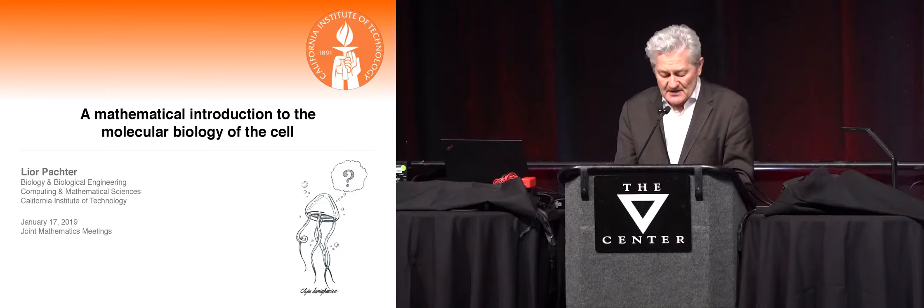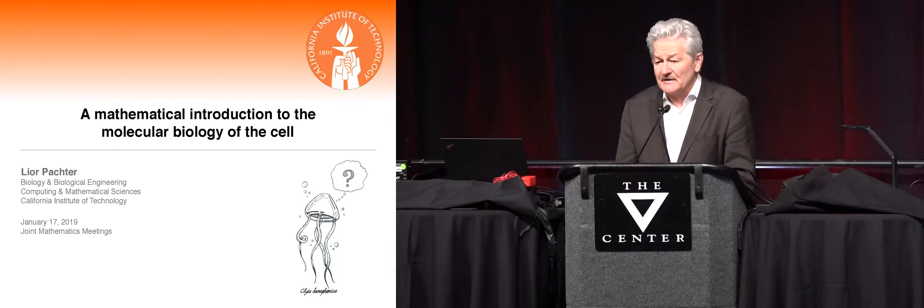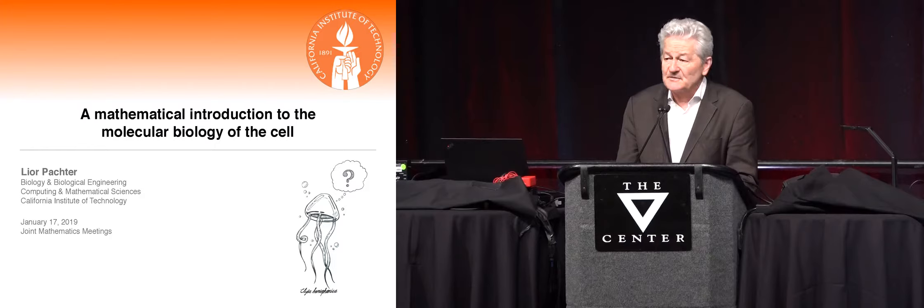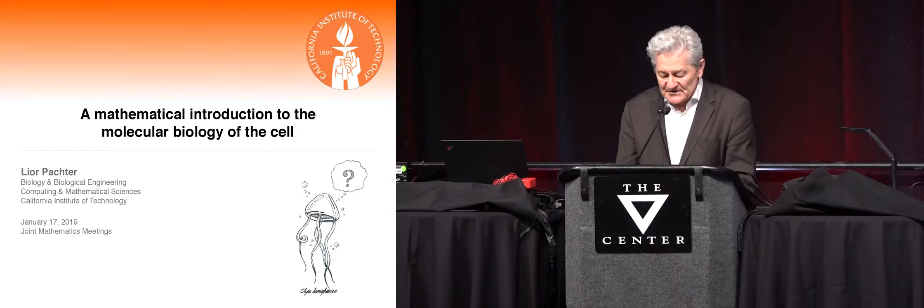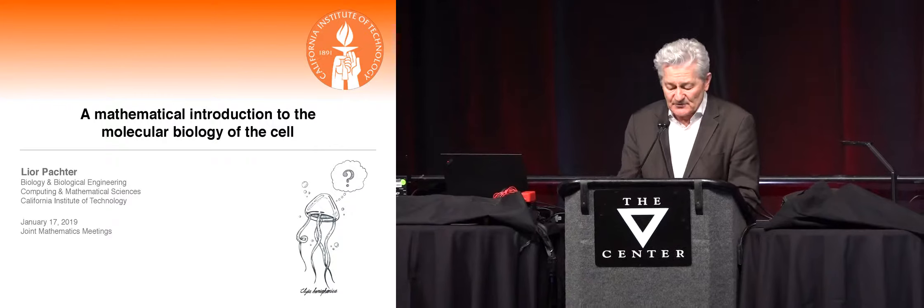Lior received his Ph.D. in mathematics from MIT in 1999 under the direction of Bonnie Berger, and one of his co-advisors was Eric Lander, another great leader in bringing mathematics to biology. After his Ph.D., Lior joined UC Berkeley. He held faculty positions in mathematics, molecular and cellular biology, and computer science, and he also had the Raymond and Beverly Sackler Chair in Computational Biology. And in 2017, Lior moved to Caltech.